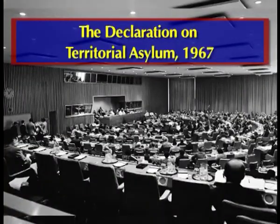Similarly, the Declaration on Territorial Asylum 1967 makes certain recommendations to states on asylum. The United Nations Declaration on Territorial Asylum was adopted by the General Assembly, and the declaration called upon governments to refrain from taking steps such as rejecting persons seeking asylum at the frontier itself. It has been claimed that these instruments do not confer a right to receive asylum. However, humanitarian considerations influence states in granting asylum.